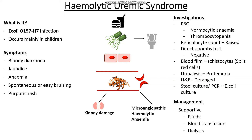For management of HUS, we mainly focus on supportive care: giving fluids, a blood transfusion if the patient is severely deficient in red blood cells, and potentially dialysis if kidney failure is end-stage. We'll conclude part one of the clotting diseases here as there is still quite a lot more to cover, which will be addressed in the next video.